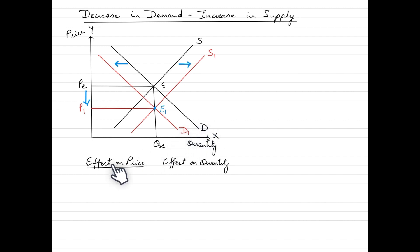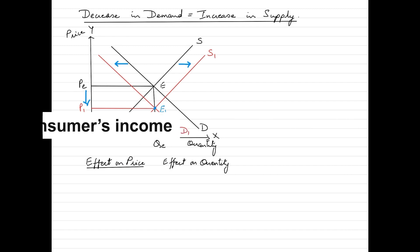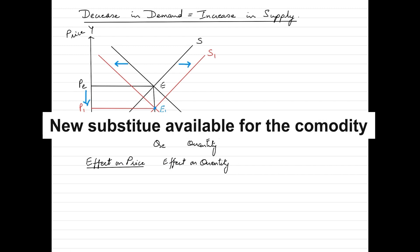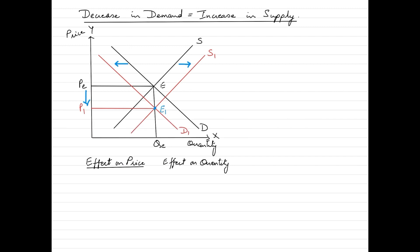When the demand for a product decreases, consumers are less willing or able to purchase a given commodity at various price levels — at each price level, less is being demanded. Why would this occur? It would occur because of various factors such as changes in preferences of consumers, a reduction in consumers' income, or perhaps a new substitute becoming available for the commodity.